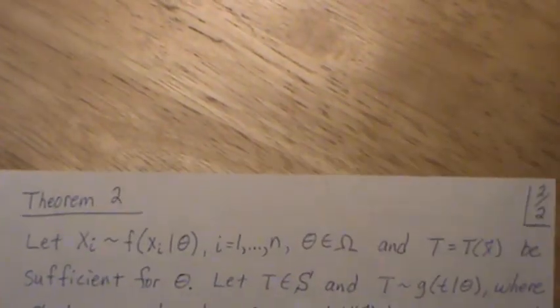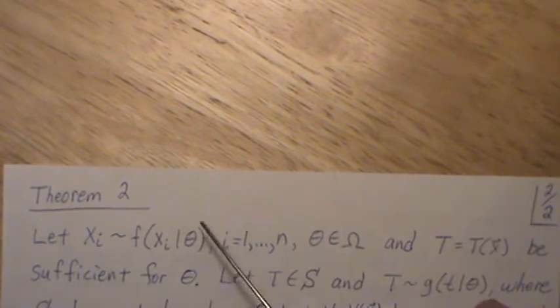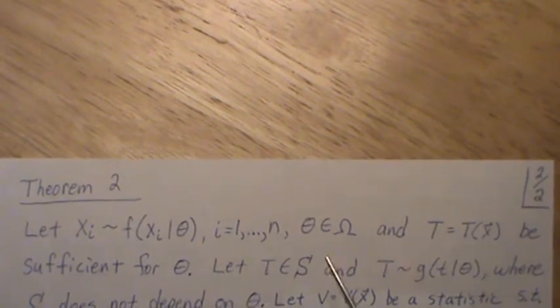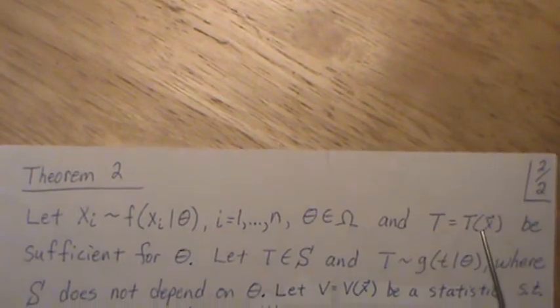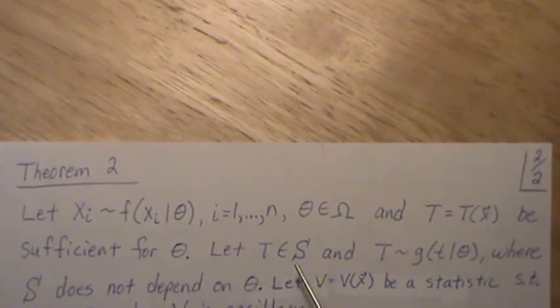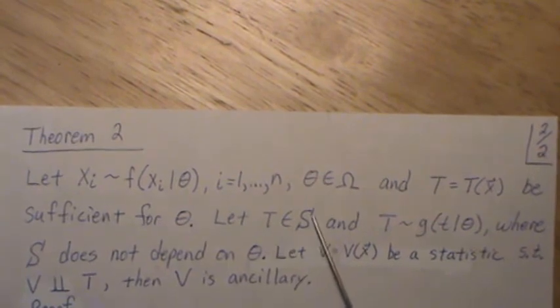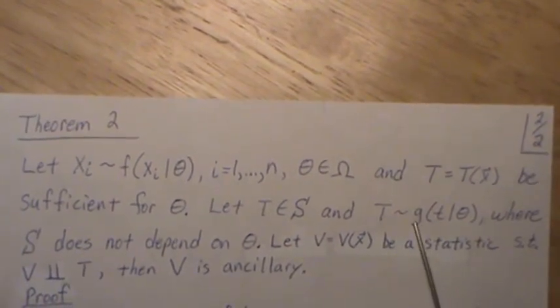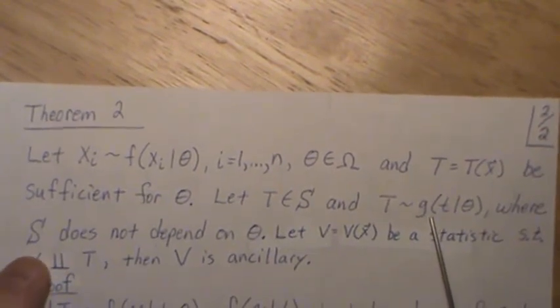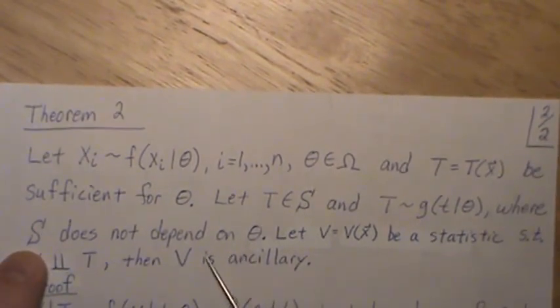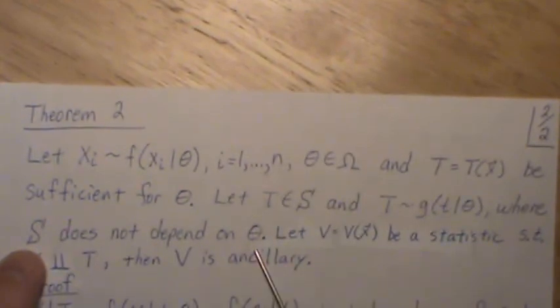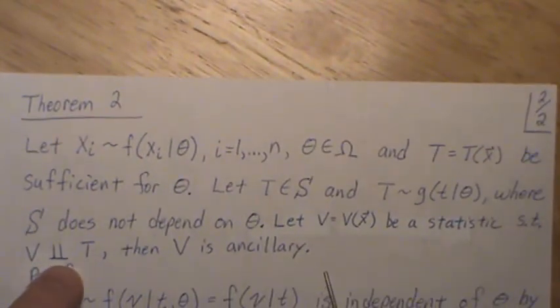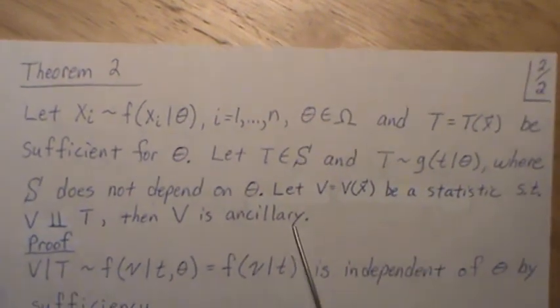Now the next theorem, let x be distributed with f, i equals one to n, the parameter lives in the parameter space of omega, let t be a sufficient statistic for theta, let t live in the sample space capital S, and t be distributed with some function g, where the sample space does not depend upon theta. Let v be a statistic such that v is independent of t, then v is ancillary.